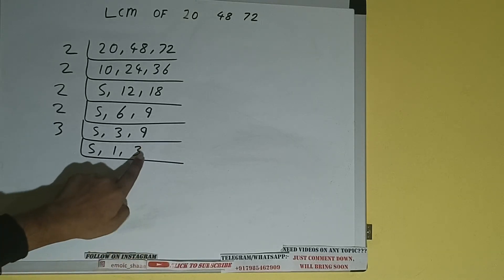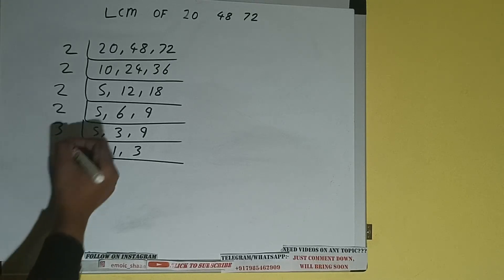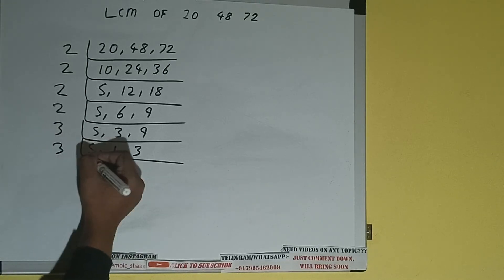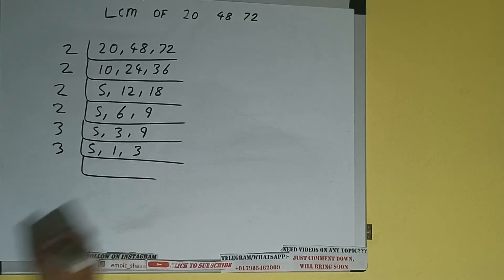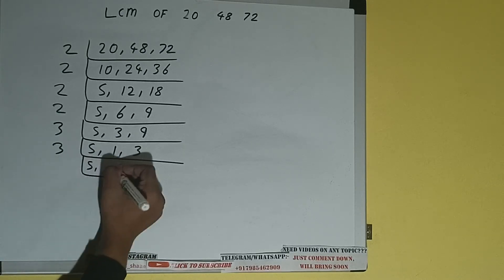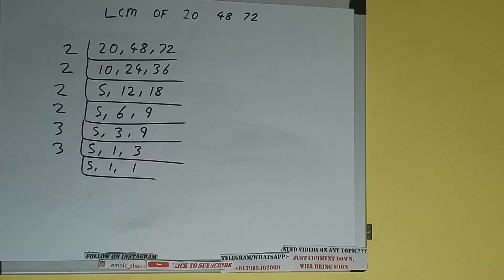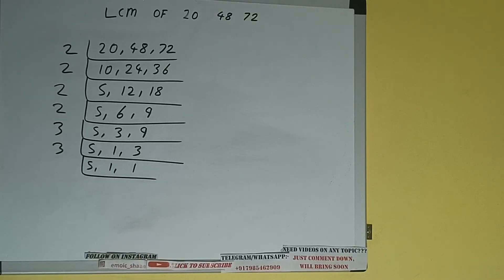Now if we check, the last number is divisible by 3, so we'll divide only the last number by 3 and copy the others down. So this will remain 5, this will remain 1, and this will become 1.